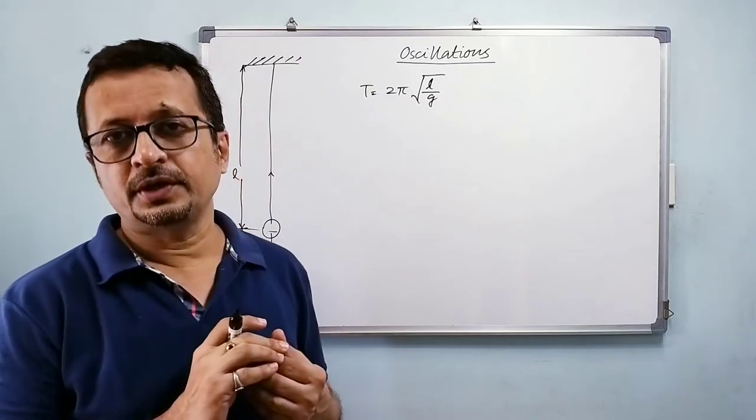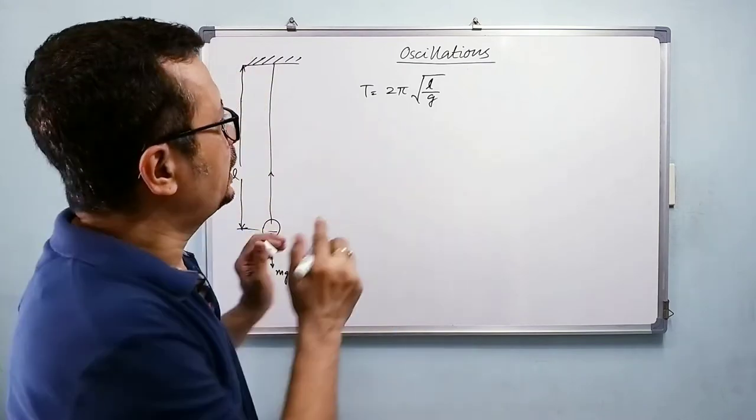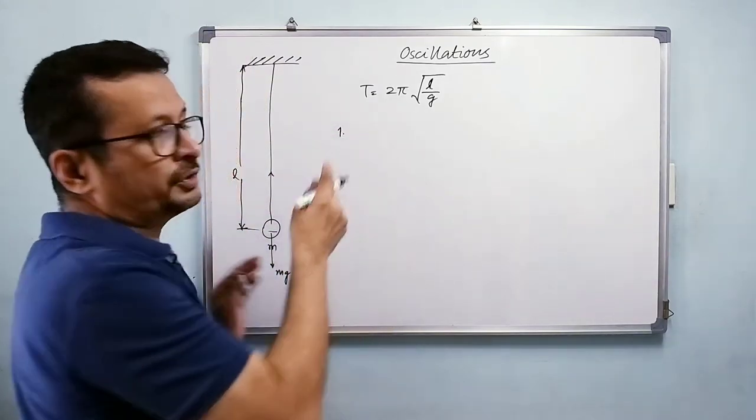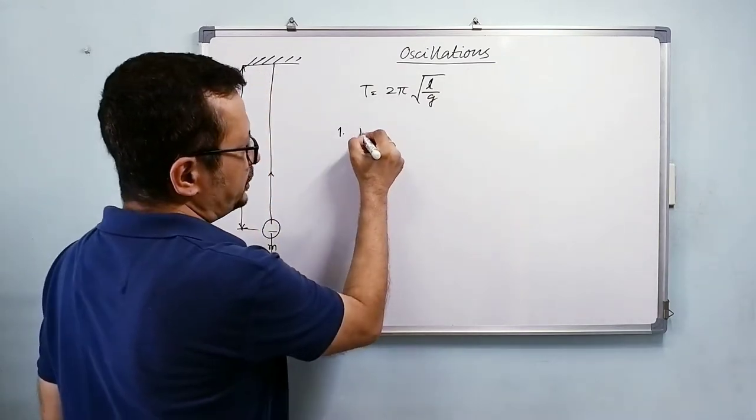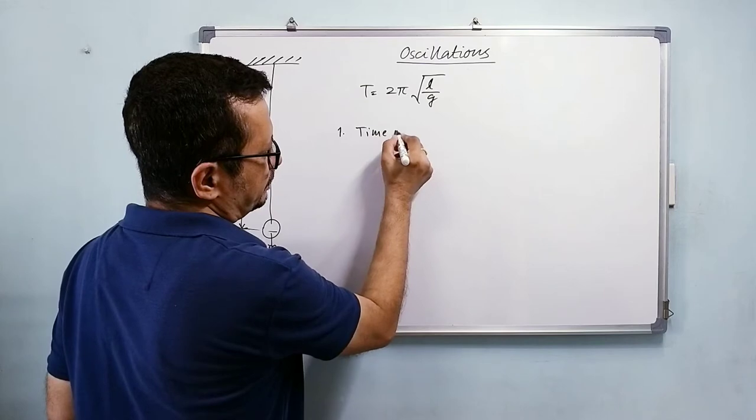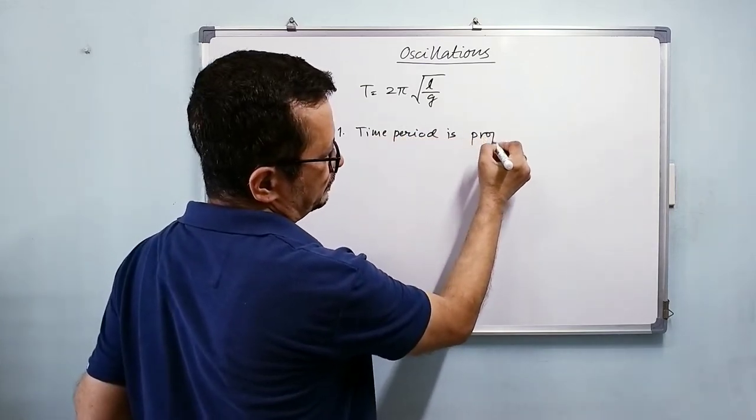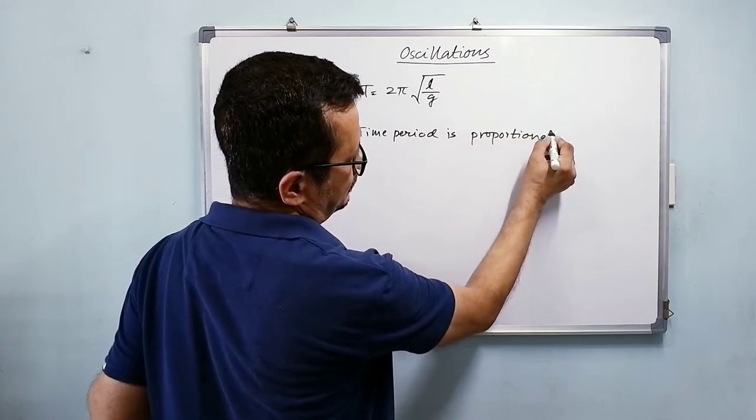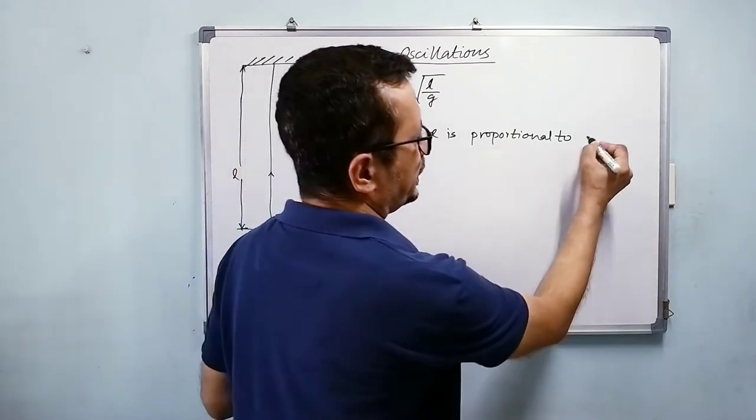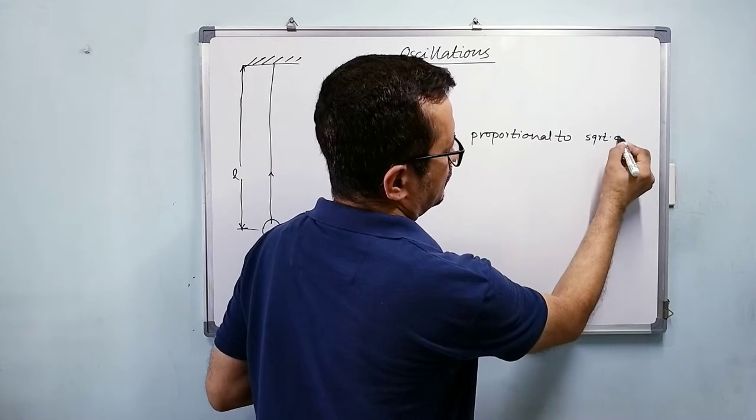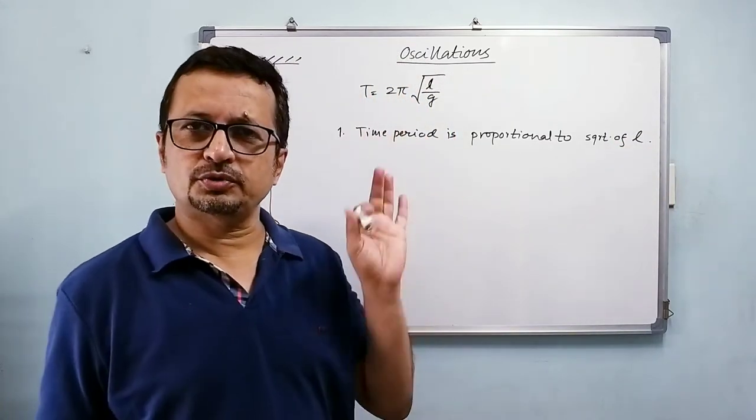We found that time period is 2π√(L/g). Now there are a few things to be noted here and we will put that as laws of simple pendulum. First of all, whatever you see in the expression here, the time period is proportional to square root of length.